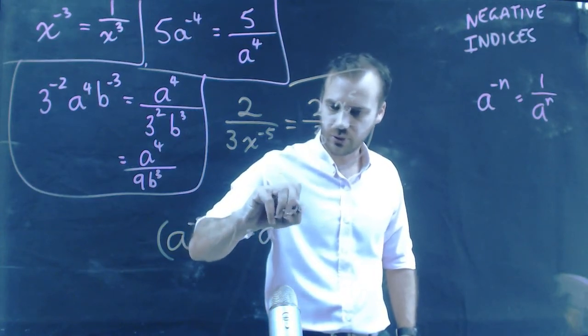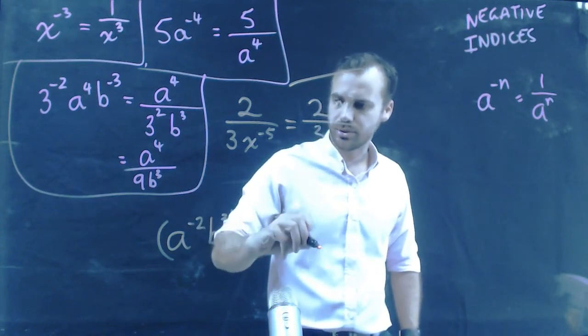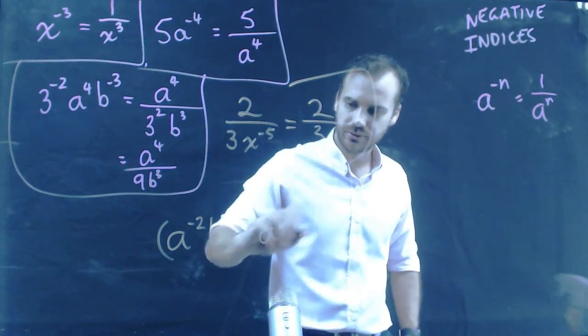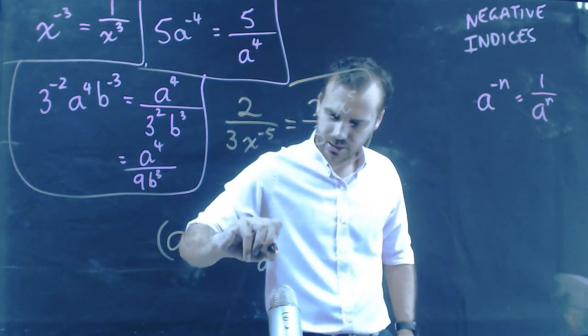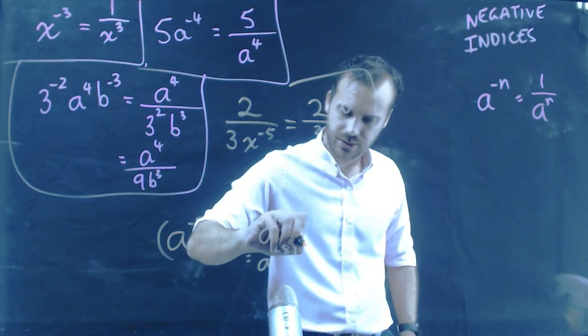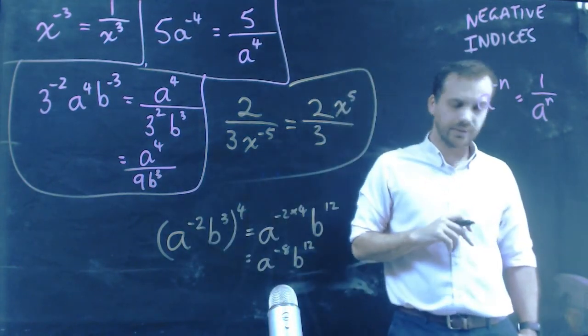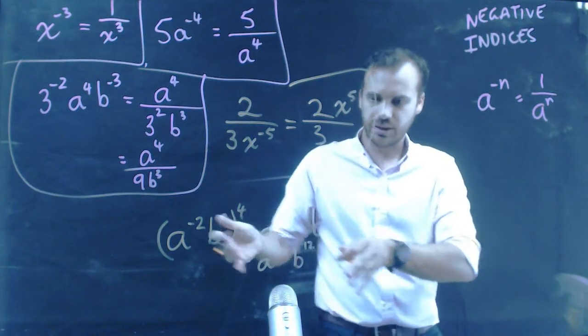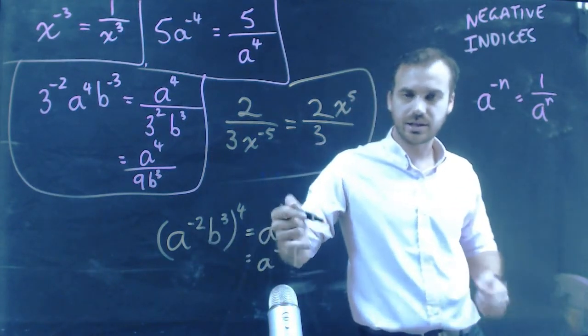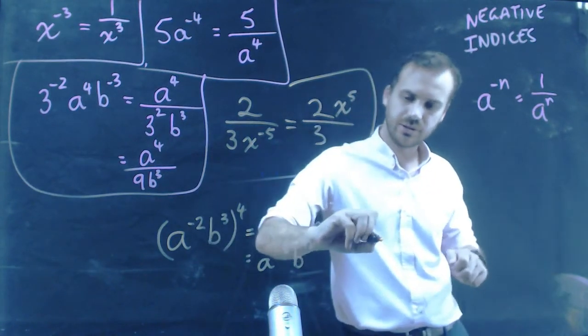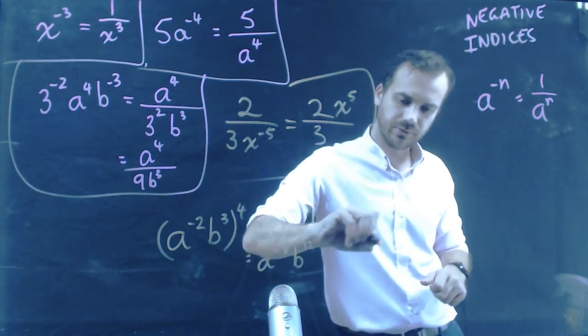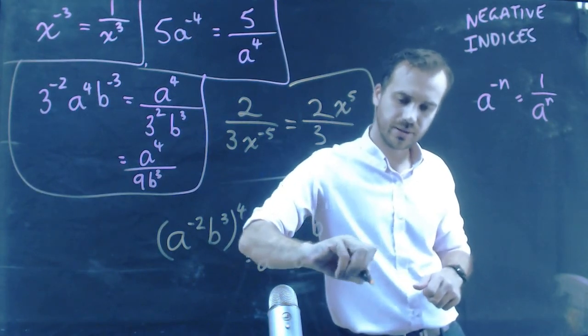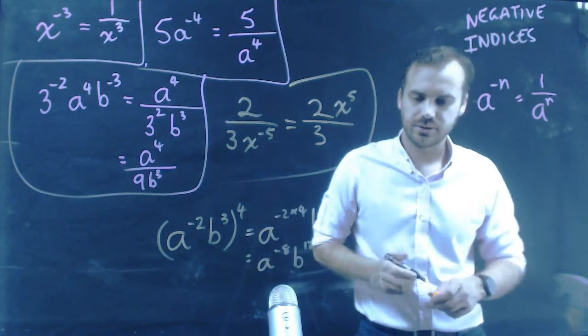So, a to the negative 2 times 4. And you can take this number and multiply it by this number, b to the 12. That's going to be a to the negative 8, b to the 12. Now, a to the negative 8, I'm just going to have to move over here a little bit. a to the negative 8 belongs on the bottom of the fraction. So, that's going to be b to the 12 over a to the 8.